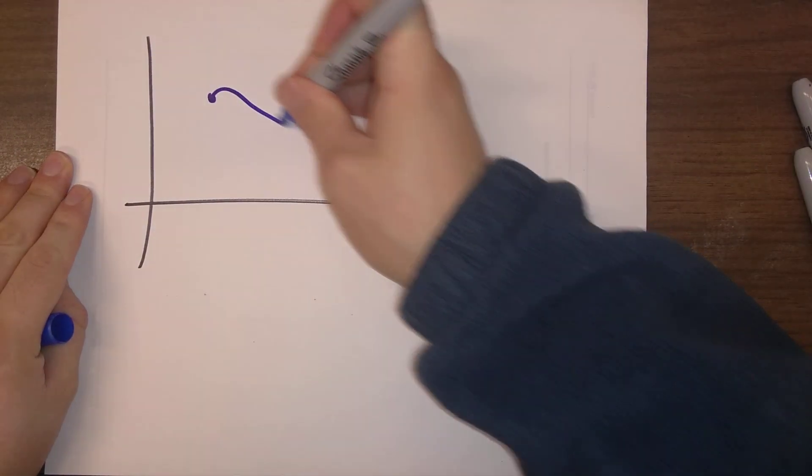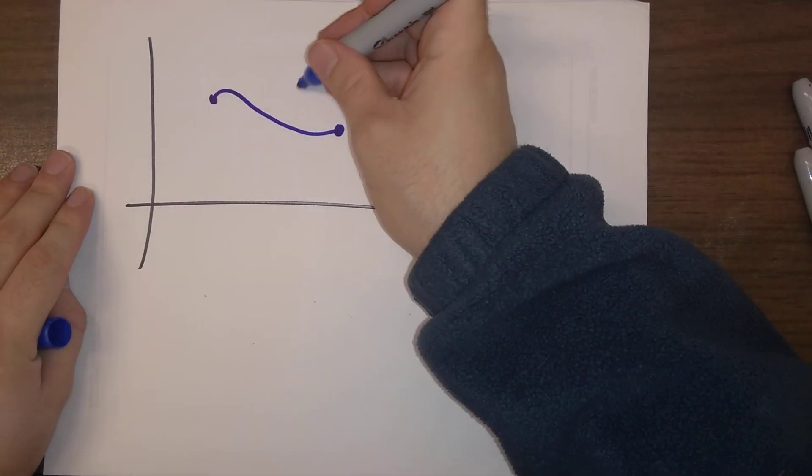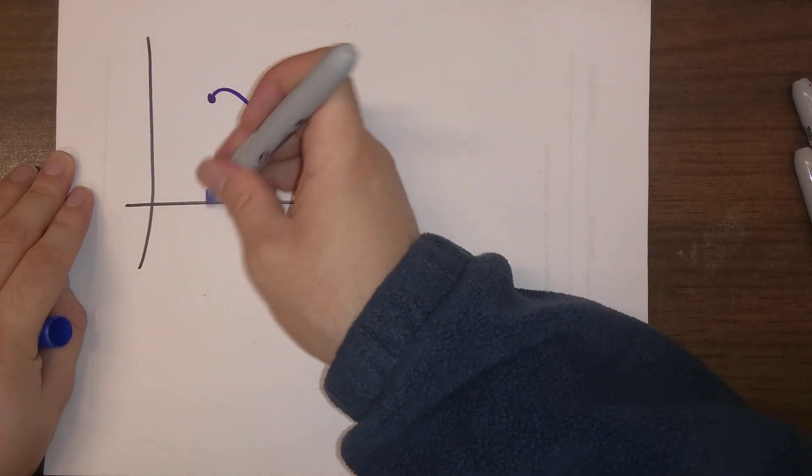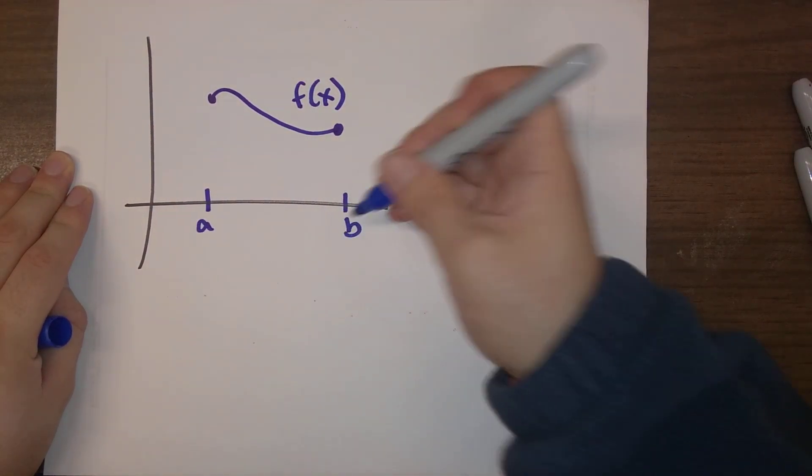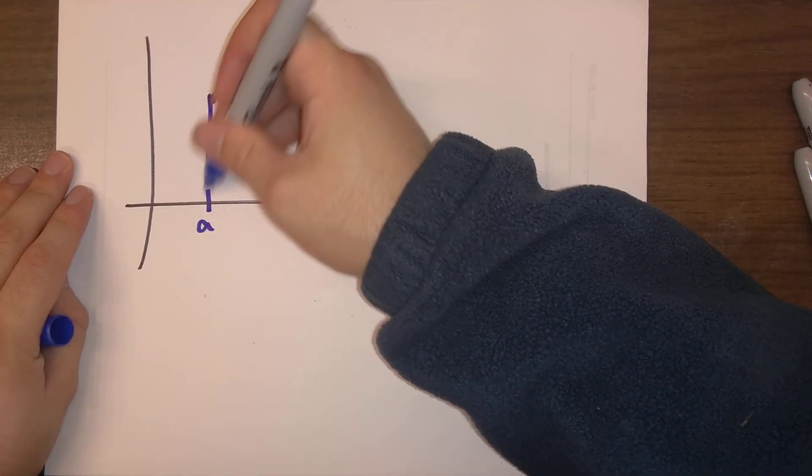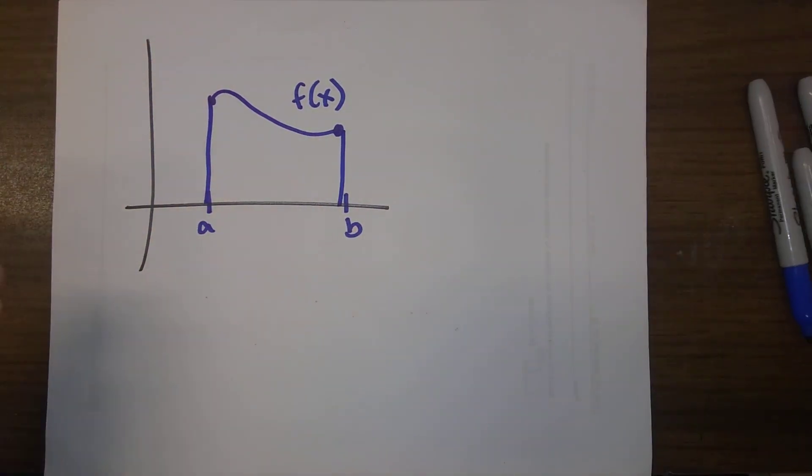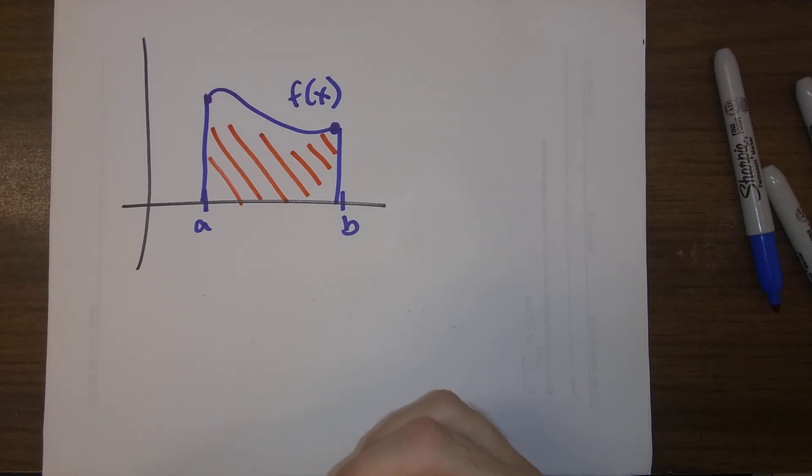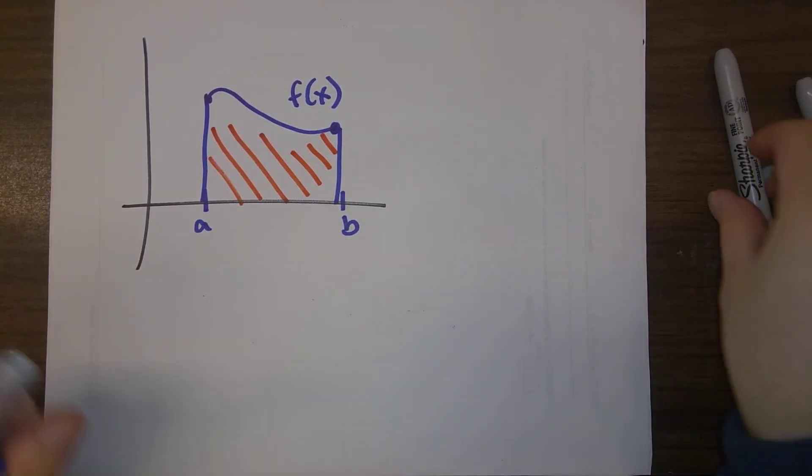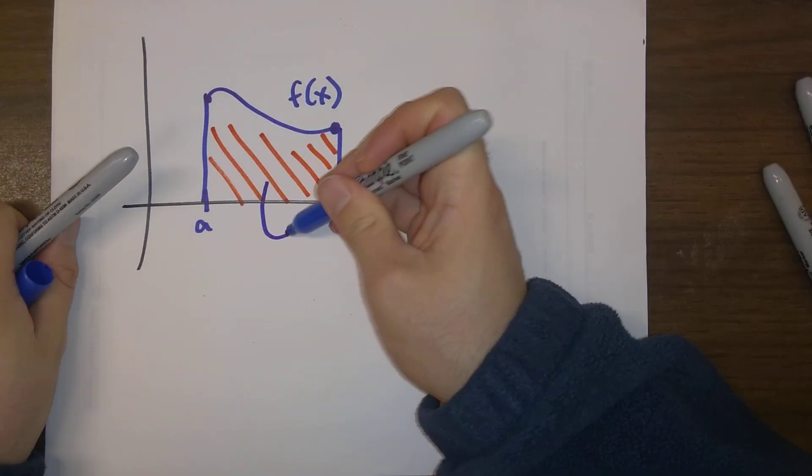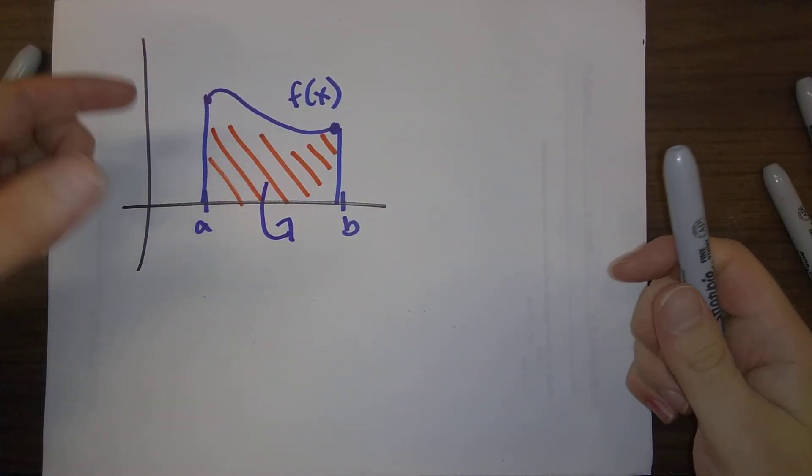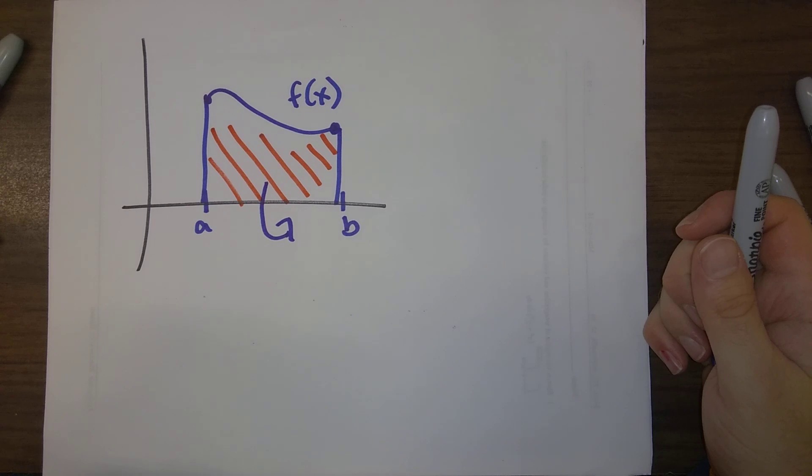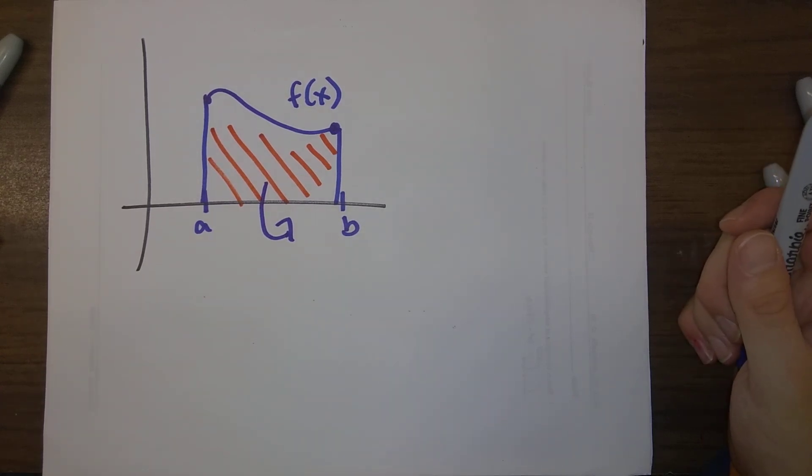Let's say that we have some function here, let's call this f(x), and here is a and here is b. We're going to look at this region right here, the region under f(x) between a and b, and let's say that we rotate it around the x-axis. That's what we're going to concern ourselves with in this section.